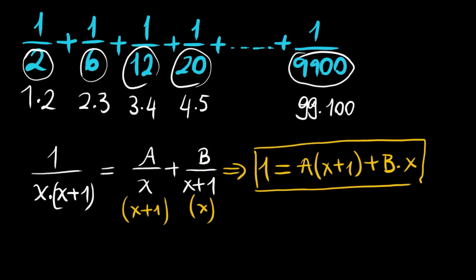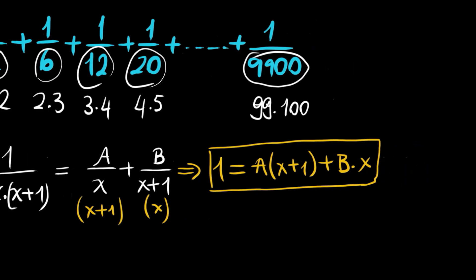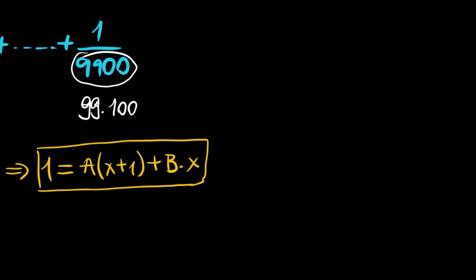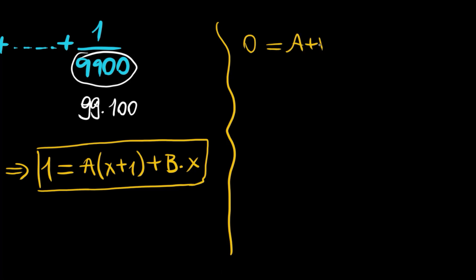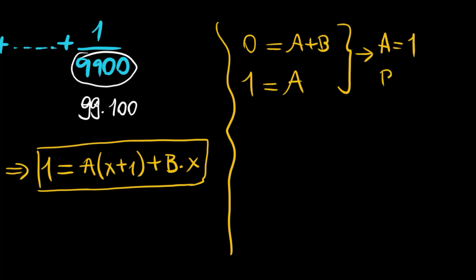This is a polynomial equation. The left and right sides must be equal for all x. The x terms: left side has 0x, right side has (a plus b)x, so a plus b equals 0. The constant term: left side is 1, right side gives a equals 1. Therefore b must equal negative 1.